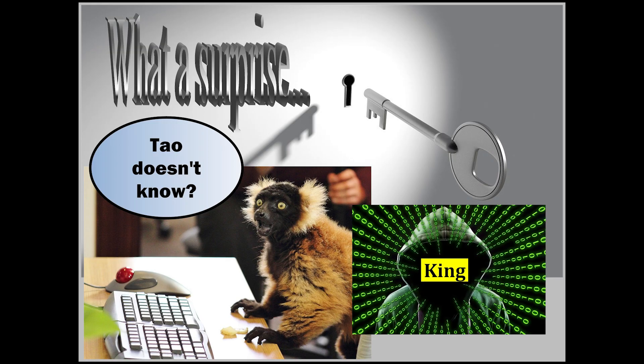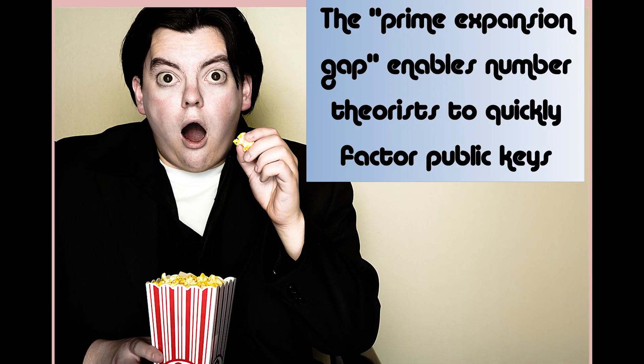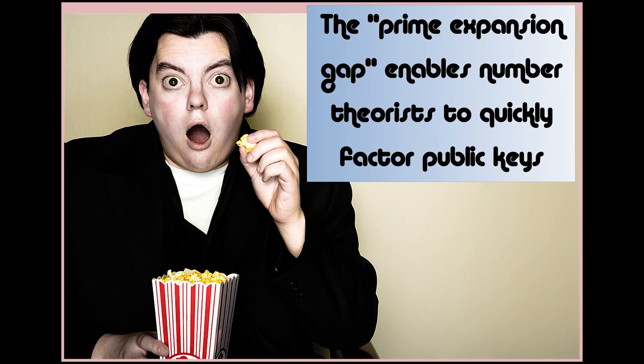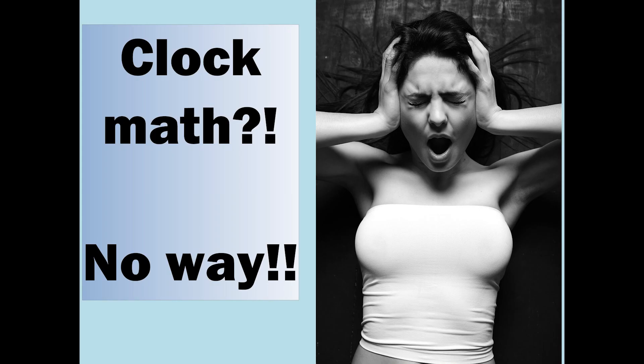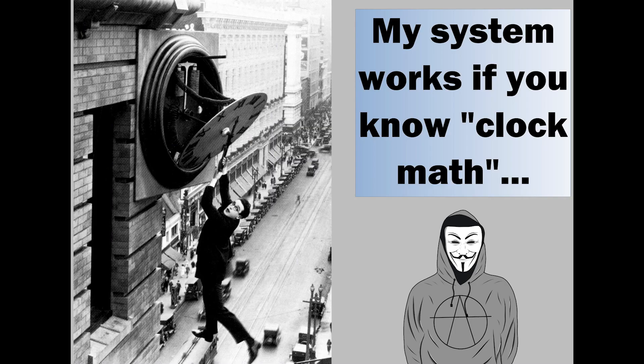For real? What a surprise. Tao doesn't know? The prime expansion gap enables number theorists to quickly factor public keys. The hunt begins with clock math. Clock math? No way. My system works if you know clock math.